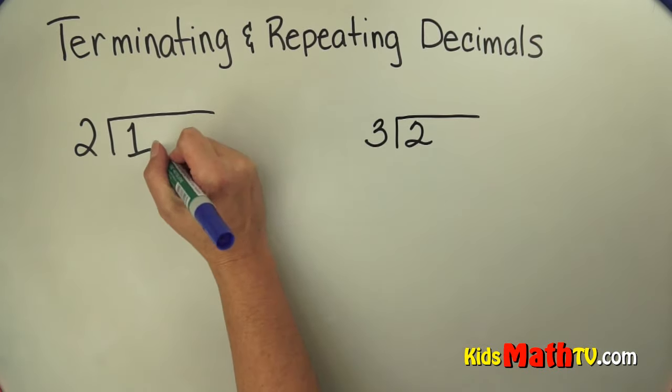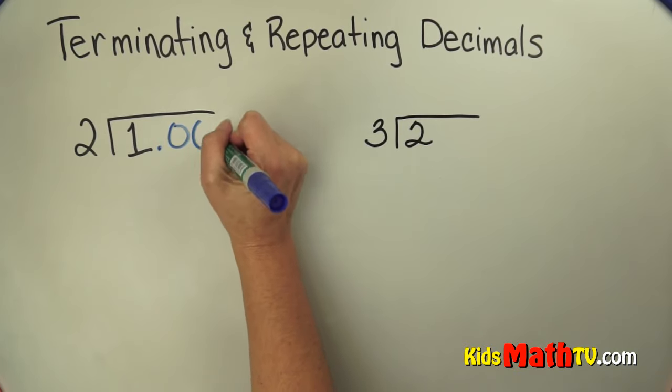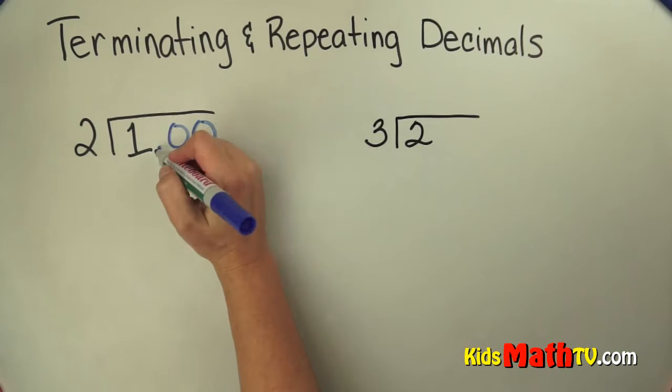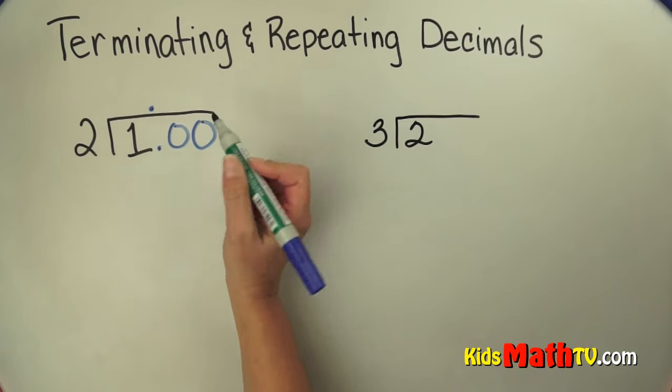In order to do this we can put a decimal place and some zeros. I can put as many zeros as I want. I'll just start with 2 there. Bring my decimals straight up.